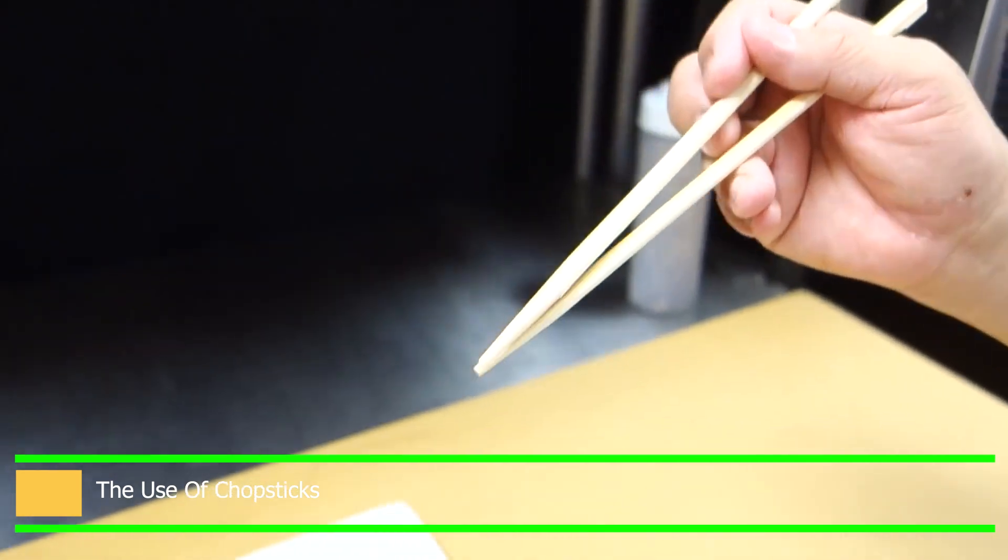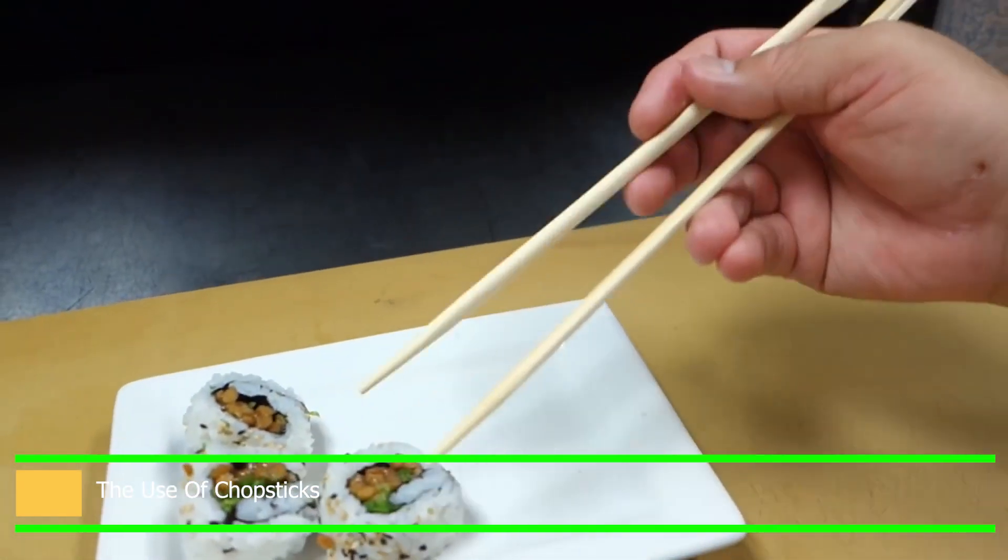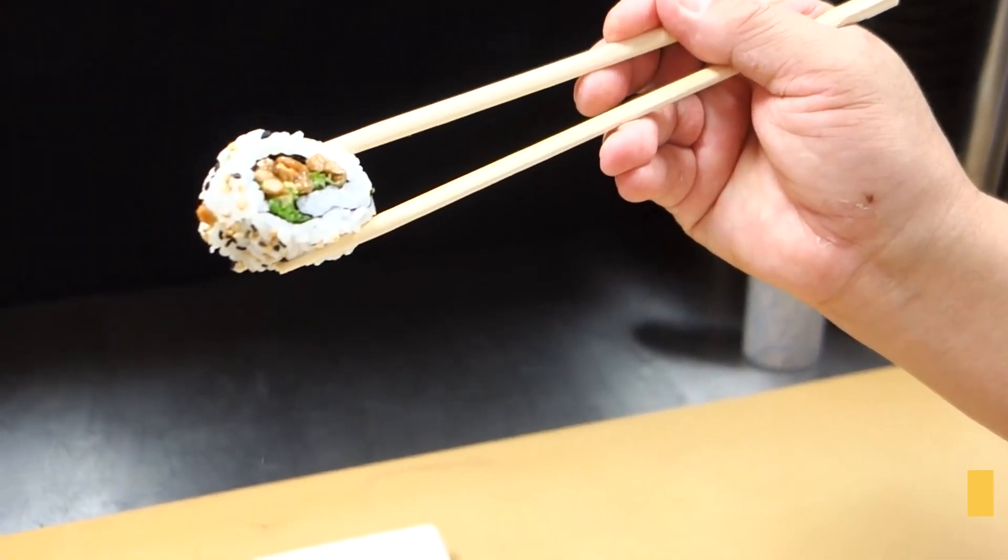Knives gradually became unnecessary since bite-sized meals eliminated the need for them. This is the origin of the use of chopsticks as eating utensils.